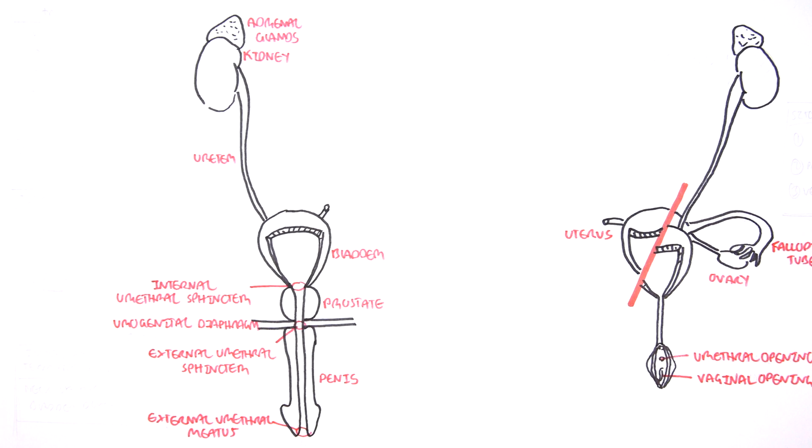I am drawing the uterus here and the reproductive system which is the fallopian tube and ovary because some differential diagnoses of hematuria affect these structures. So that was the male and female urinary system.